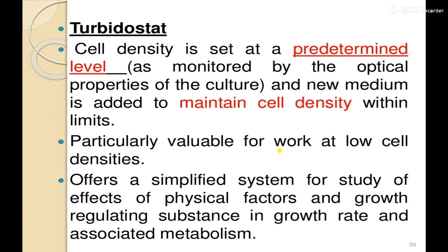Turbidostat: cell density is set at a predetermined level as monitored by the optical properties of the culture, and new medium is added to maintain cell density within those limits. It is particularly valuable for work at low cell densities. It offers a simplified system for the study of effects of physical factors and growth-regulating substances on growth rate and associated metabolism.